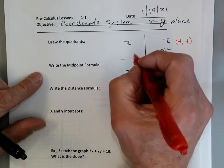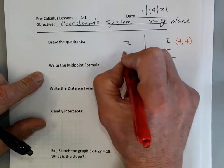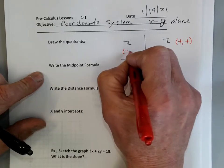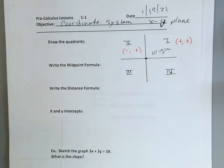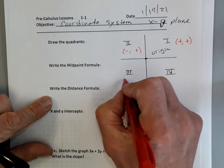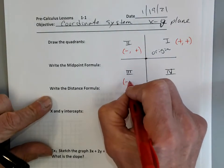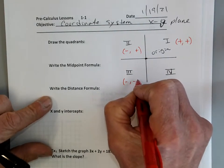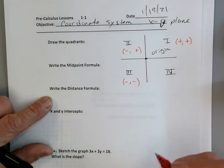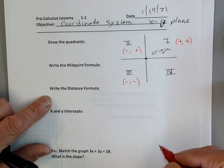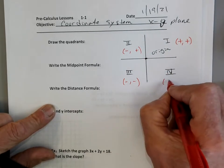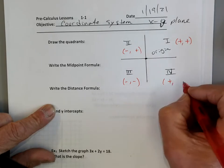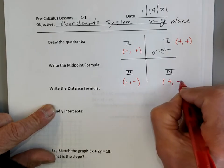Quadrant 2 — what we know about points in Quadrant 2 is that the X's are negative and the Y's are positive. What we know about Quadrant 3 is that the X's are negative and the Y coordinates are negative. And of course in Quadrant 4, the X values are positive and the Y values are negative.